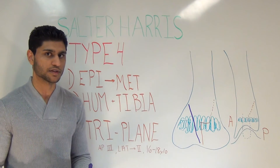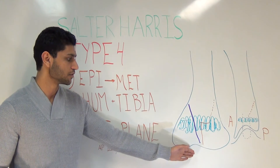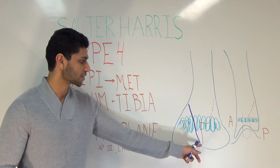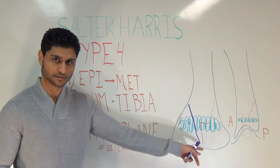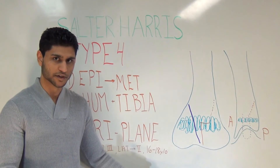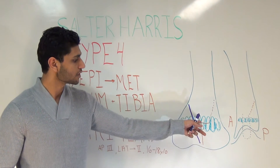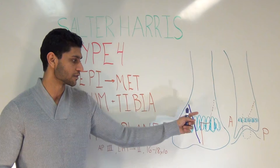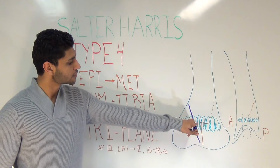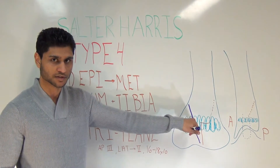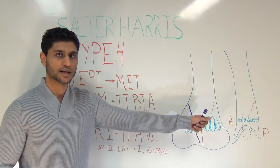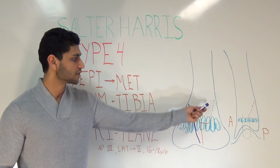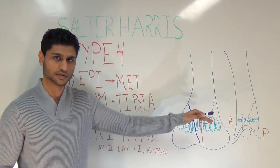If you only took an AP of this type of fracture, you would think you only have a type 3 Salter-Harris fracture, because all you'd see is an epiphyseal fracture in the sagittal plane. But the fracture line doesn't just stop there — it starts anteriorly, stays in the sagittal plane, and once it reaches the epiphyseal plate, it turns lateral. That makes sense, because the lateral part is weaker. The fracture line continues laterally, then continues in the coronal plane, going posterior and medial, which is why you won't see this portion on an AP.